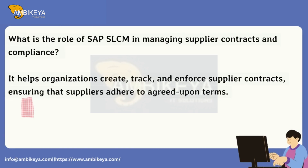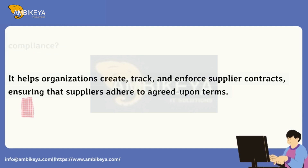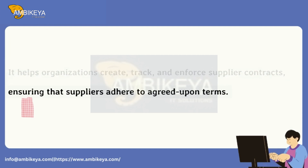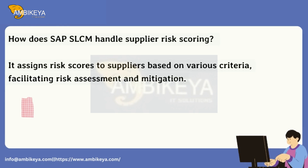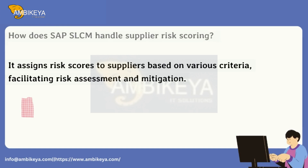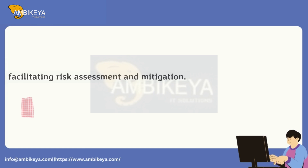What is the role of SAP SLCM in managing supplier contracts and compliance? It helps organizations create, track, and enforce supplier contracts, ensuring that suppliers adhere to agreed-upon terms. How does SAP SLCM handle supplier risk scoring? It assigns risk scores to suppliers based on various criteria, facilitating risk assessment and mitigation.